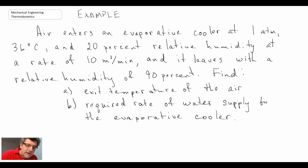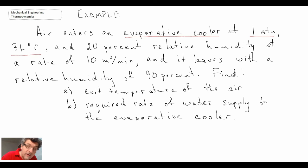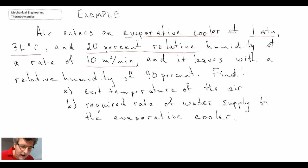The problem involves an evaporative cooler — an air conditioning system used in very dry, desert-like climates. Air enters at one atmosphere and 36 degrees C, which is quite hot. The relative humidity coming in is 20%, which is very low, so it's quite dry. The airflow rate coming in is 10 meters cubed per minute.